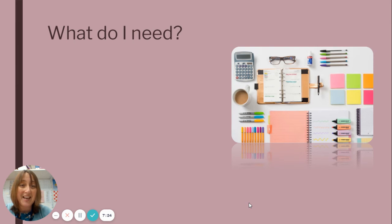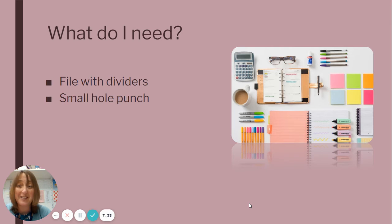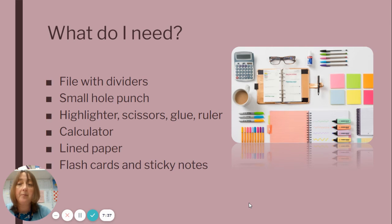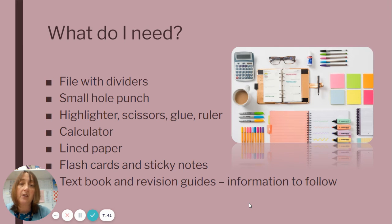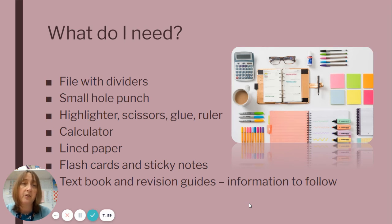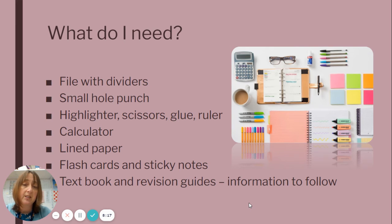In terms of what to bring to lessons, there are a few things to prepare in advance. You'll want a good array of supplies for your A Levels generally, and these will be useful to bring along in September. You'll be using a laptop much more than you may have been used to lower down the school, so think about how you're going to organise yourself with your computer. Regarding textbooks and revision guides, we'll send you information about those in due course — they are available to purchase, and we'll recommend specific ones and send that out so you can buy them in advance.